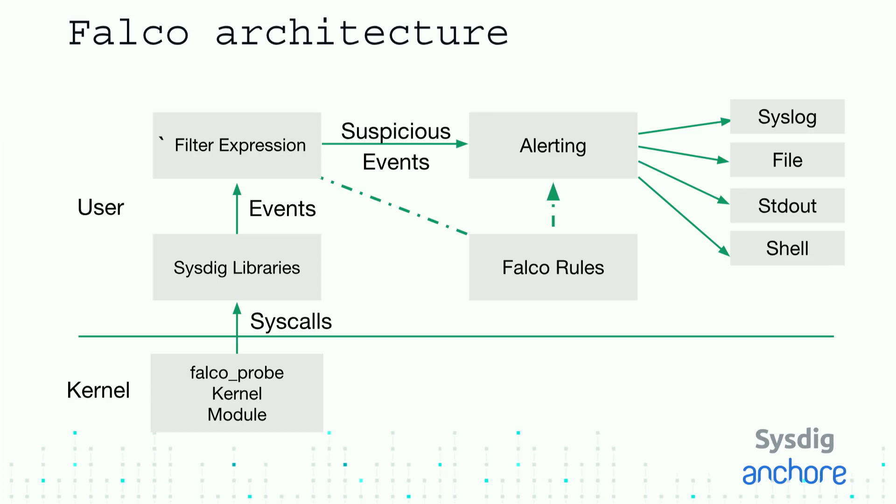The way Falco works architecturally: there is a kernel module that takes back a stream of system calls — the low-level calls that users and applications use to access disk, memory, network, run commands, and other things. That stream goes through processing libraries borrowed from the Sysdig open source project, then we create a stream of events that goes through the Falco rules engine, and if there's an alert, we send it out to the various notification channels. We're making changes to be much more generic at the bottom — not only a tap into the kernel but a generic HTTP endpoint where you can pull data from other sources.